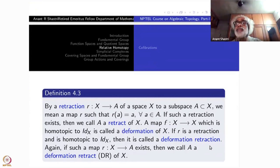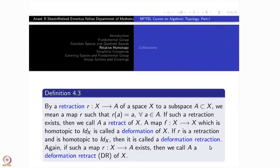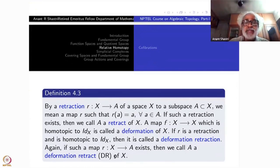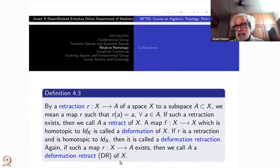The homotopy is taking place inside X. The image of r is A, but the identity map goes from X to X, so the space comes slowly and sits inside here — that is the meaning of a deformation retraction. If such a map exists, then A is called the deformation retract of X. So we have deformation retraction (the map) and deformation retract (the space). Retracts are spaces; deformation retraction is the action, the homotopy, the map itself.